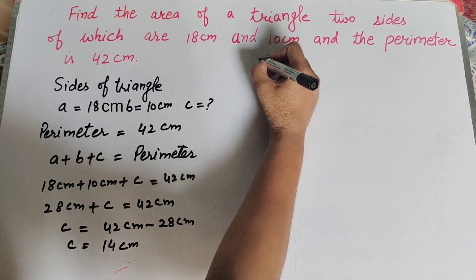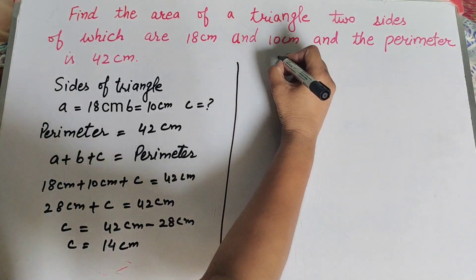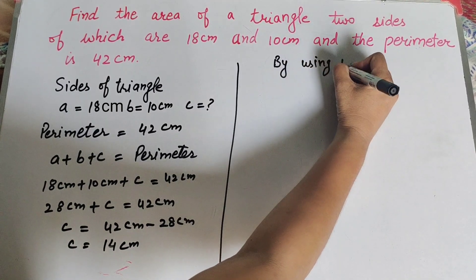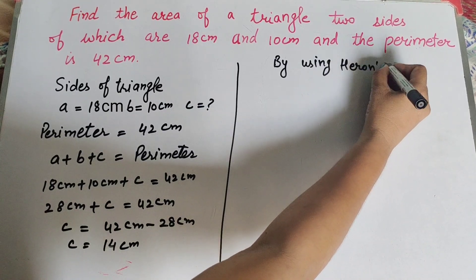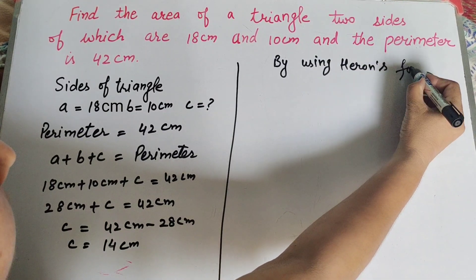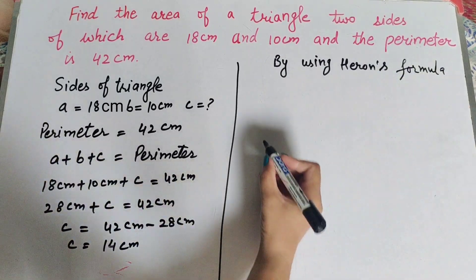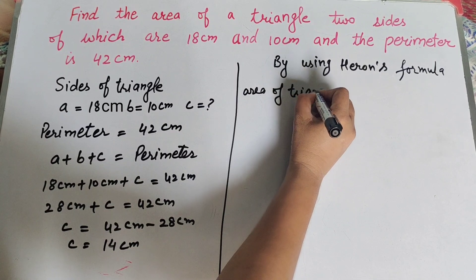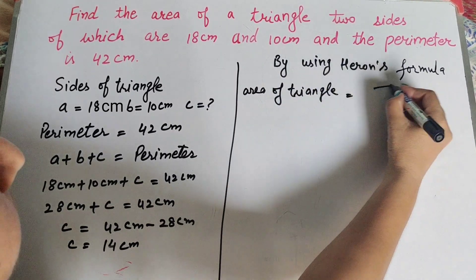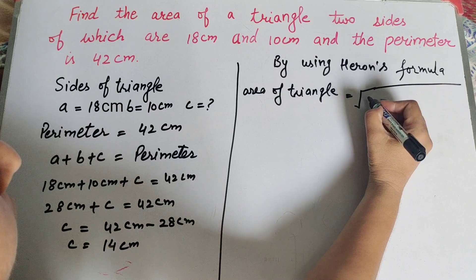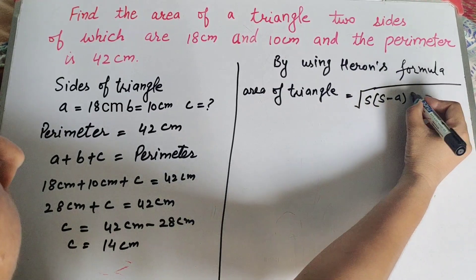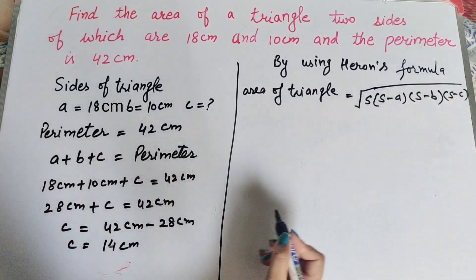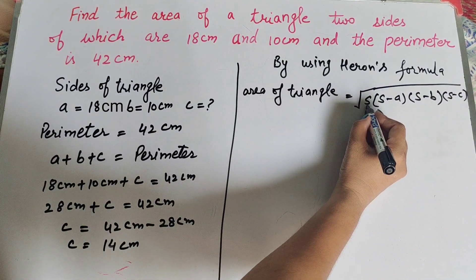Now we find the area of the triangle by using Heron's formula. The area of the triangle equals the square root of s into (s minus a) into (s minus b) into (s minus c), where s is the semi-perimeter.